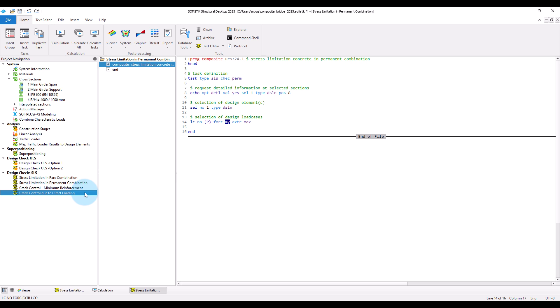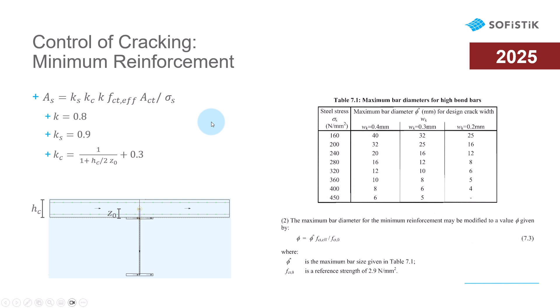Let's have first a look at the minimum reinforcement. When the concrete cracks, the stresses in the concrete that are set free have to be carried by the reinforcement. The reinforcement amount in the slab should be sufficient to limit the occurring reinforcement stress to a value that guarantees the crack limit. According to Eurocode 4, this amount can be calculated by the effective tensile strength of the concrete times the area of the tensile zone divided by the limit stress, which depends on the selected crack width limit, the reinforcement bar diameter, and some additional factors.